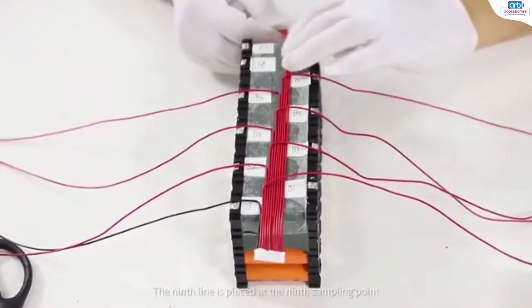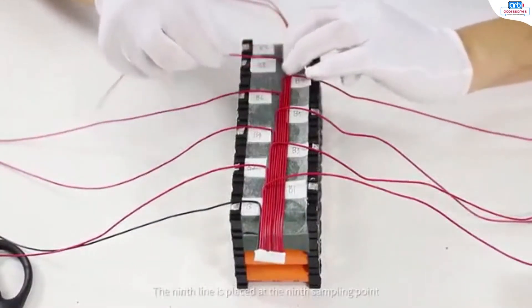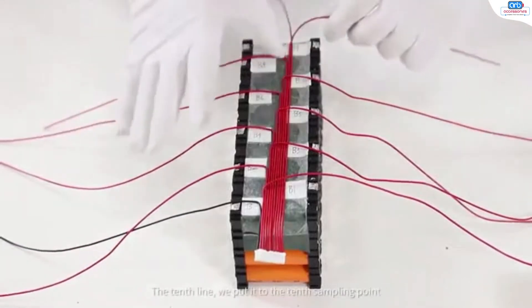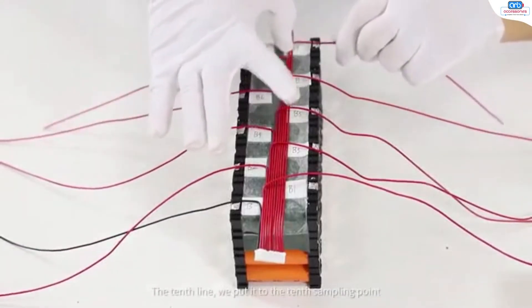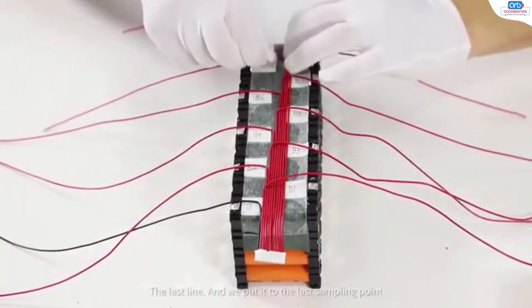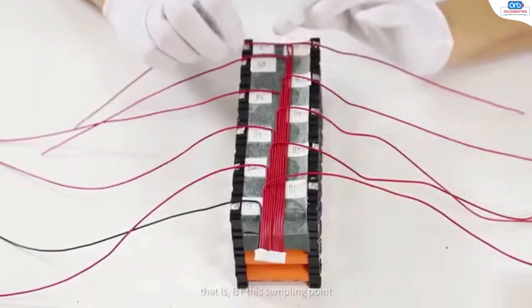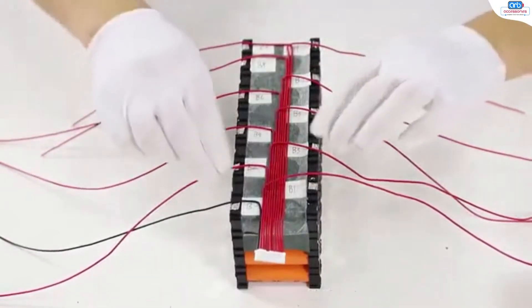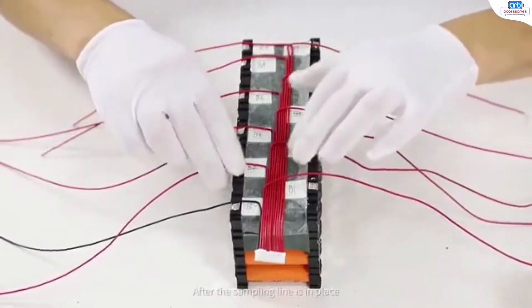The ninth line, we put it to the ninth sampling point. The tenth line, we put it to the tenth sampling point. The last line, we put it to the last sampling point. That is, B positive electrode, this sampling point.